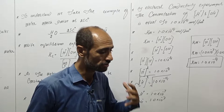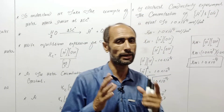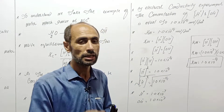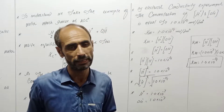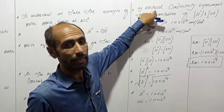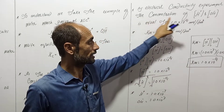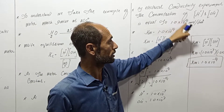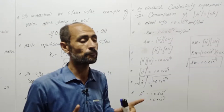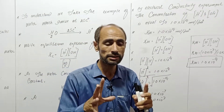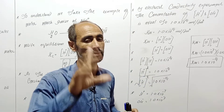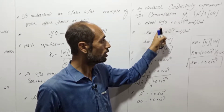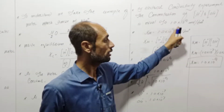Kw is the ionization constant of water. By the electrical conductivity experiment, the product of hydrogen ion and hydroxyl ion concentrations is equal to 1.0 × 10⁻¹⁴ mol² per dm⁶. So Kw = [H+][OH-] = 1.0 × 10⁻¹⁴.